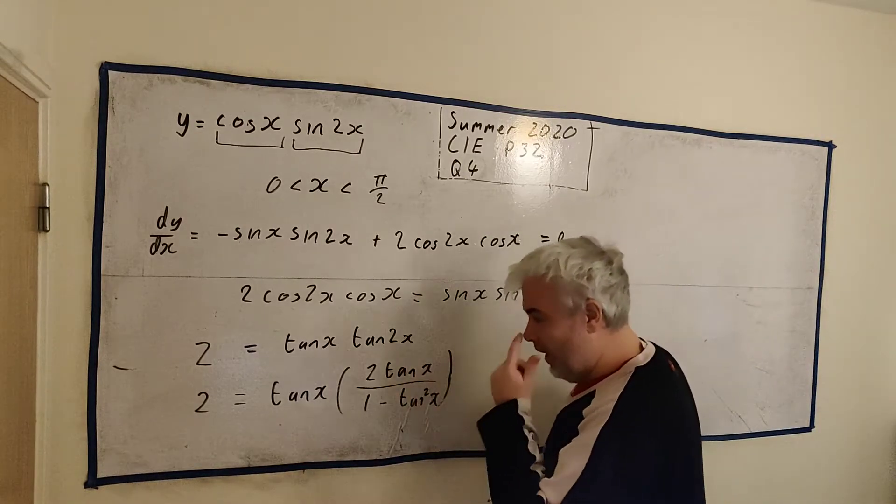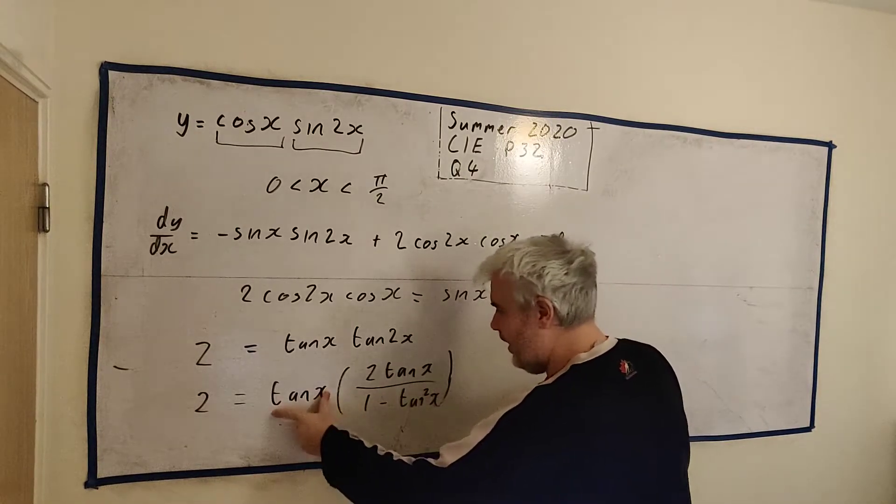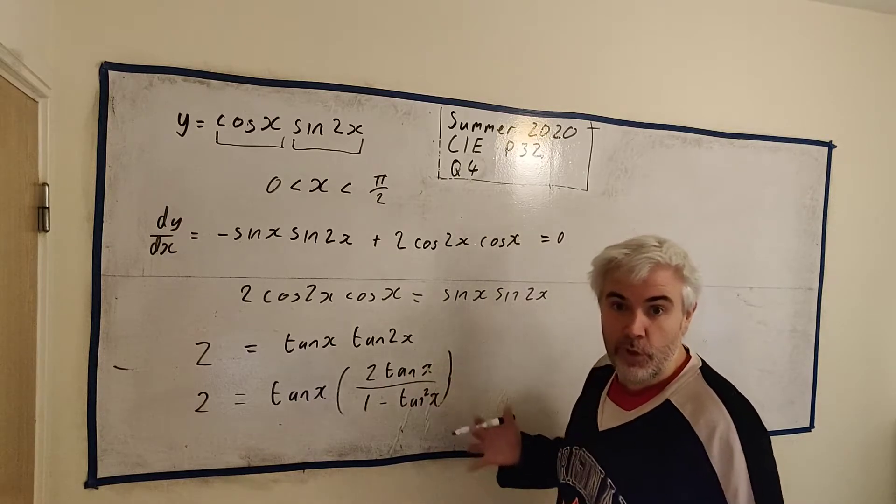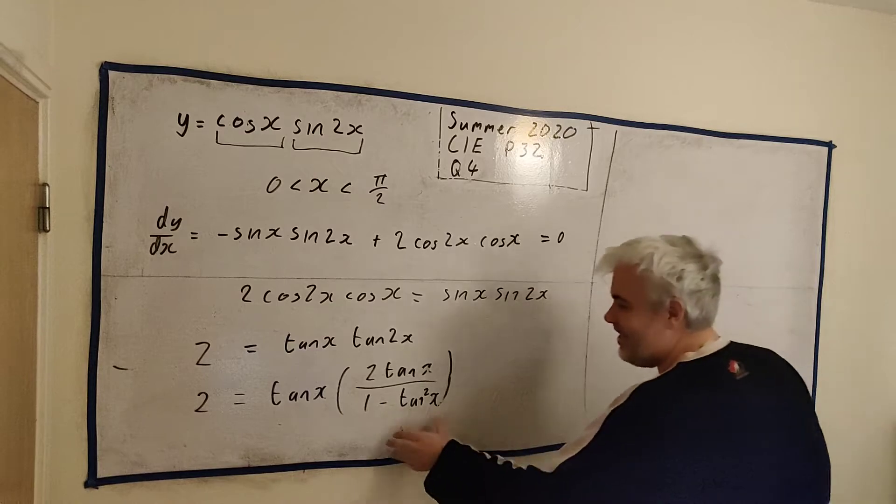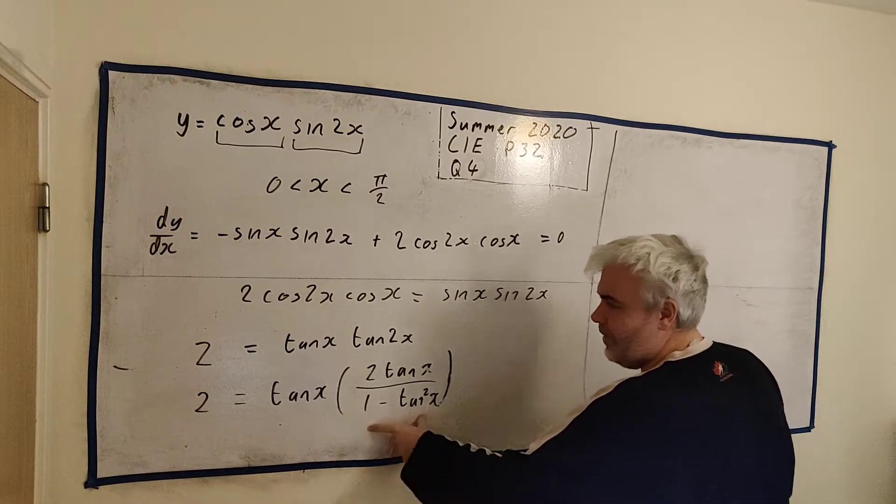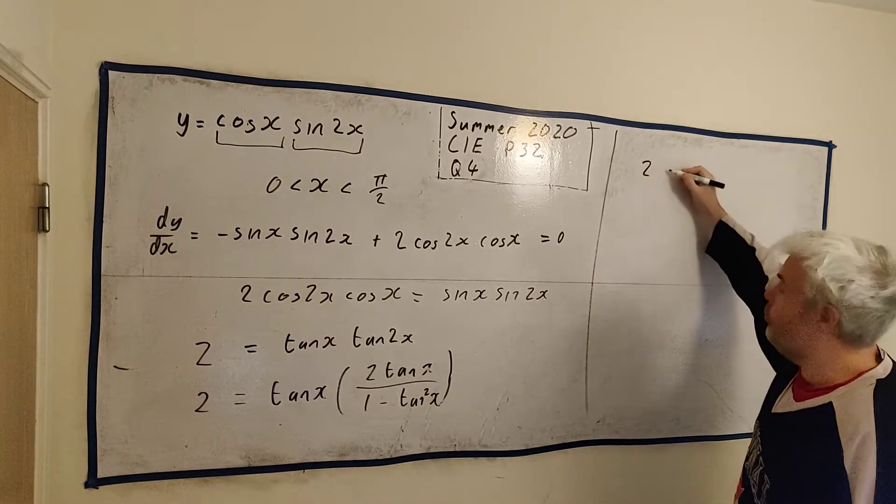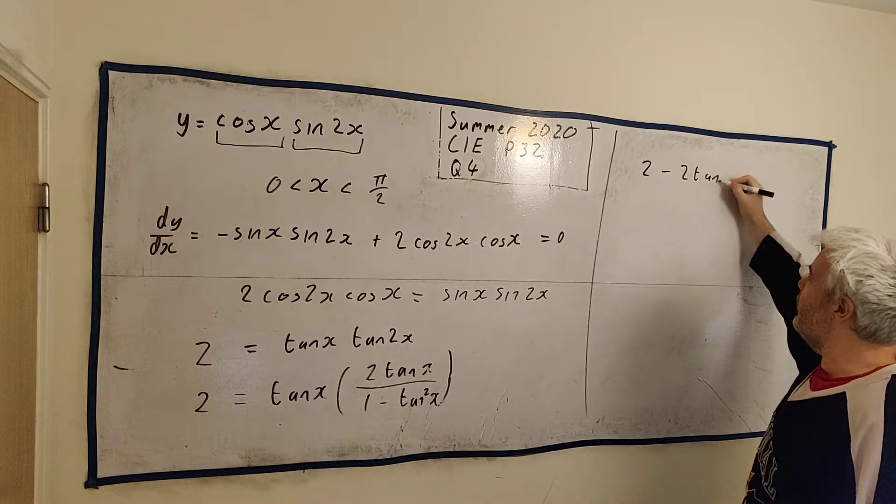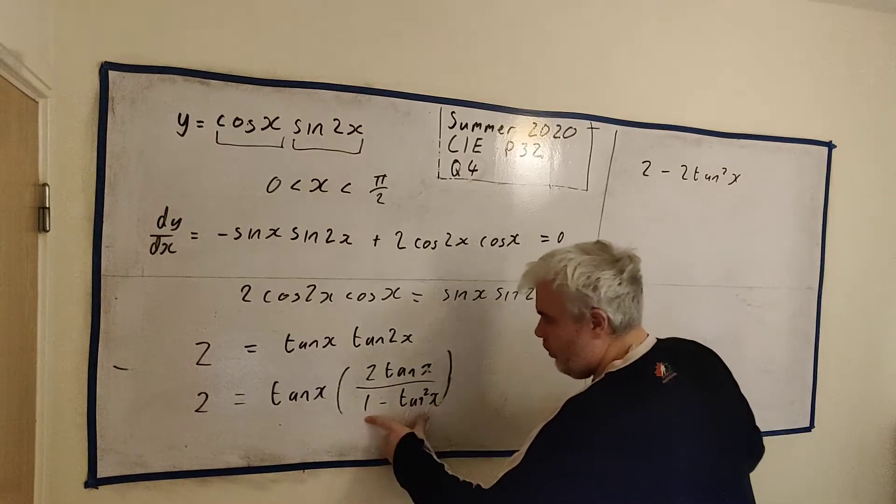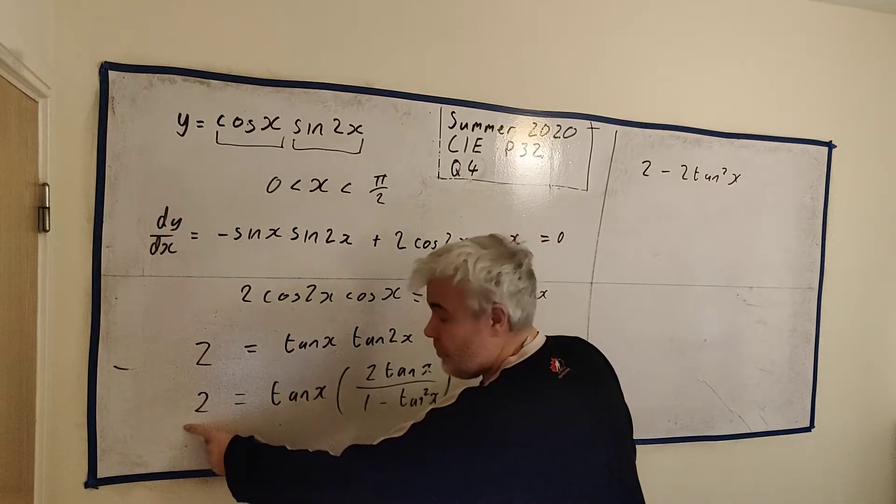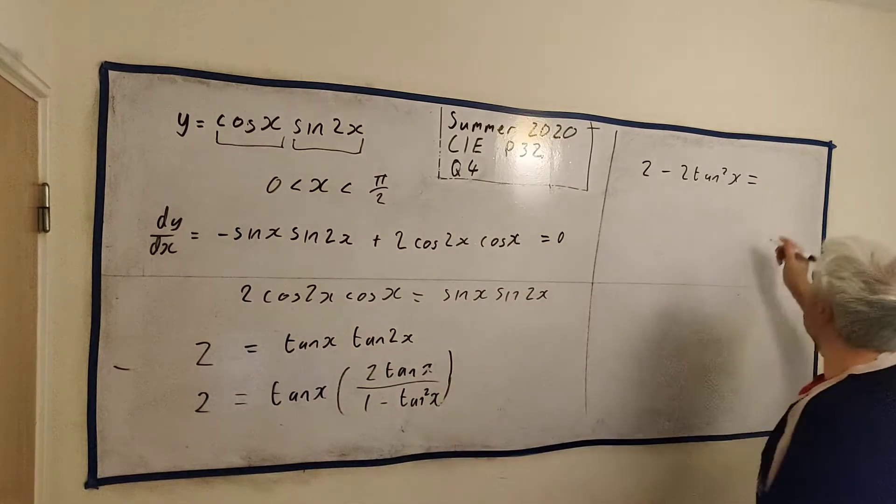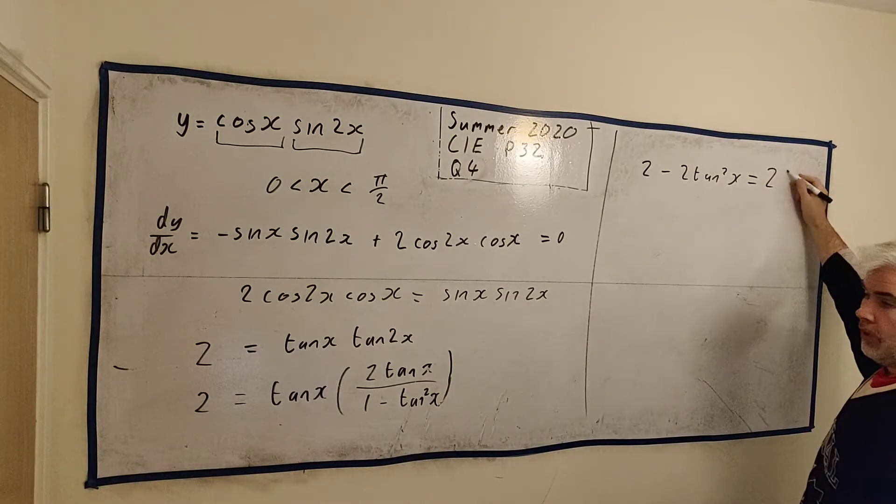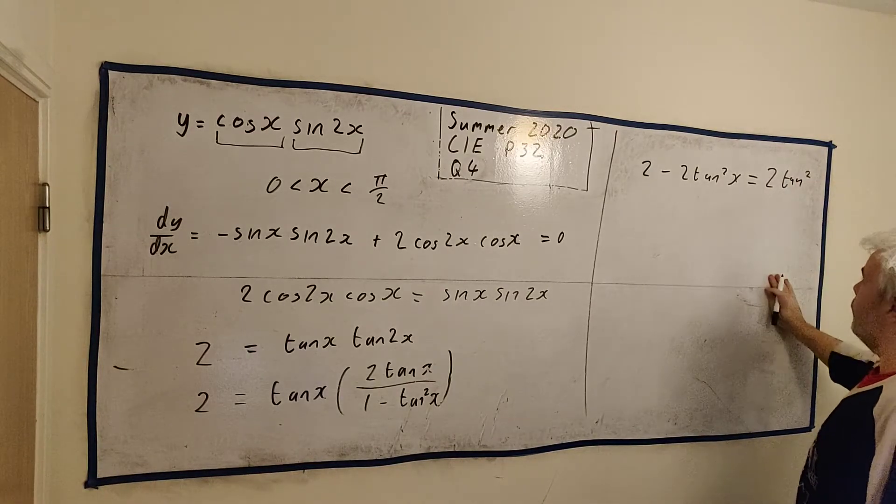We can play around with this. All we have is one thing here. We have tangent x, tangent x, tangent x. We should be able to get all these into one tangent x. Let's start doing that. Let's multiply both sides by this denominator here. We'll get 2 minus 2 tangent x squared. That's 1 minus tan x multiplied by this 2. And that is equal to tan x multiplied by tan x, or there's a 2 there, 2 tan x squared.